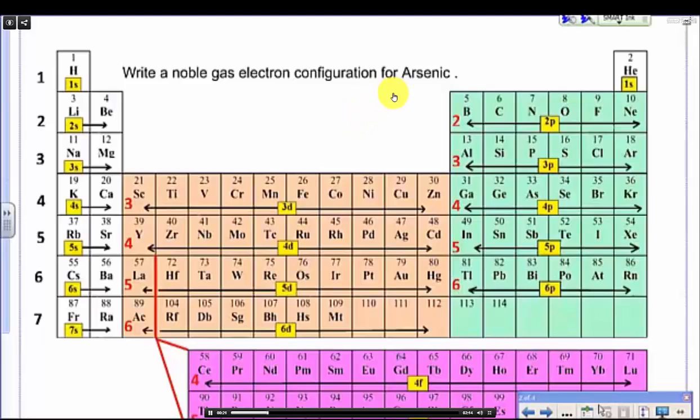Alright, let's write a noble gas electron configuration for arsenic. The keyword is noble gas. Where are the noble gases? Noble gases are in the last column of the periodic table.